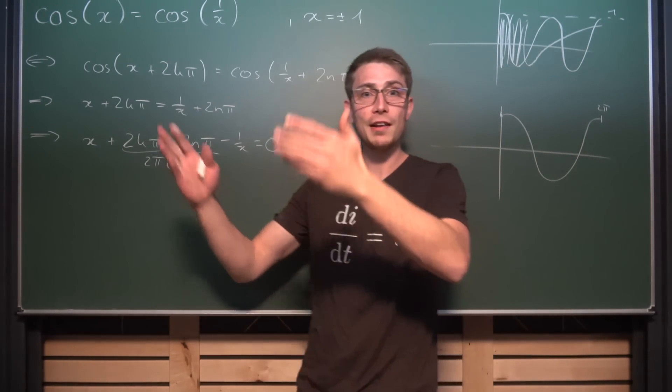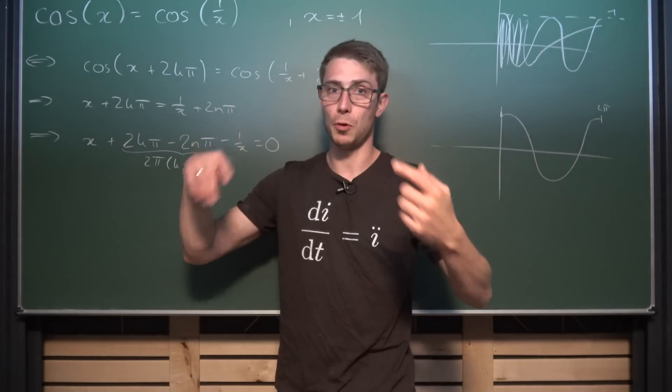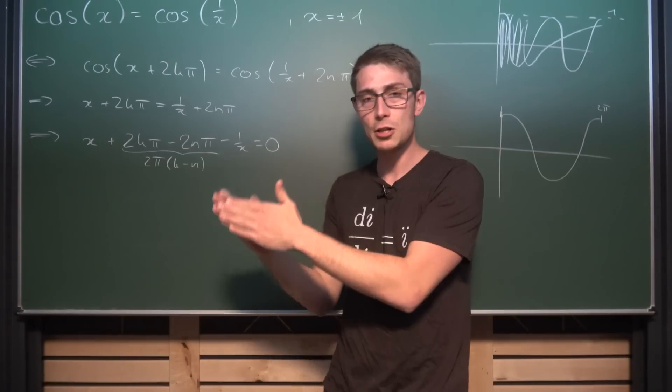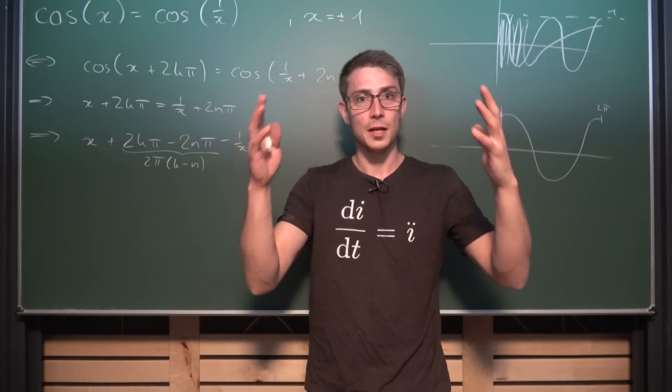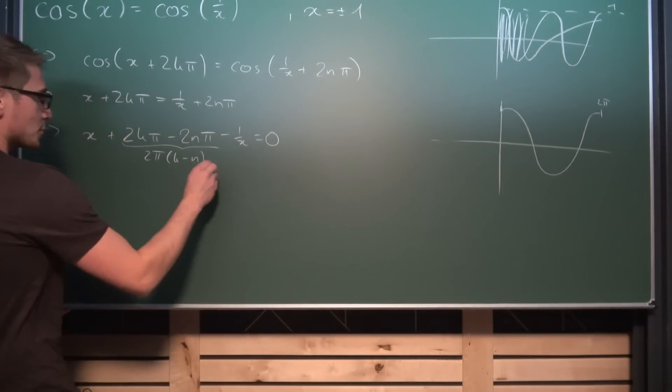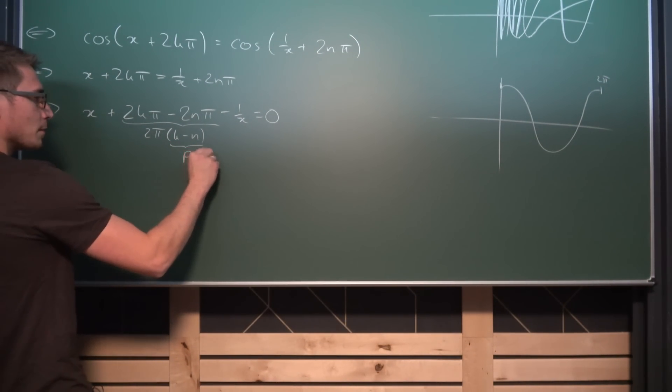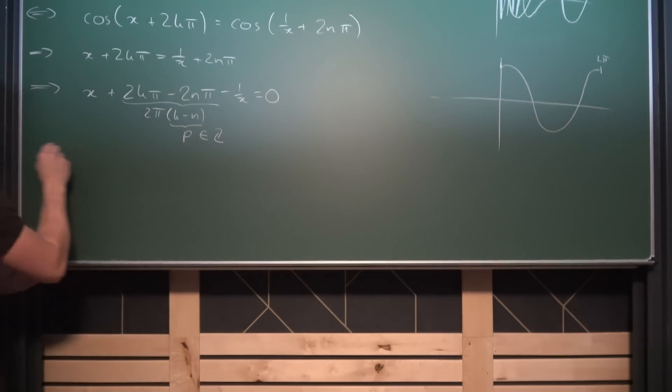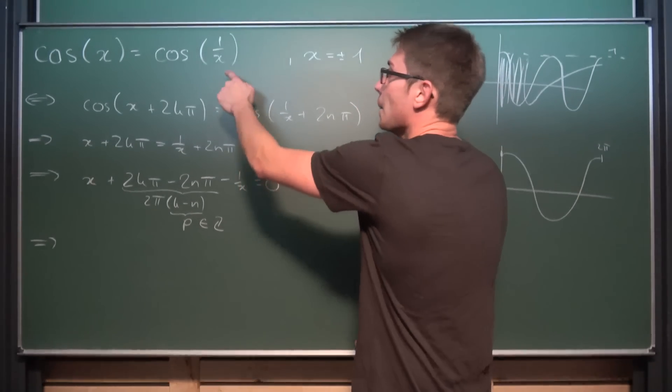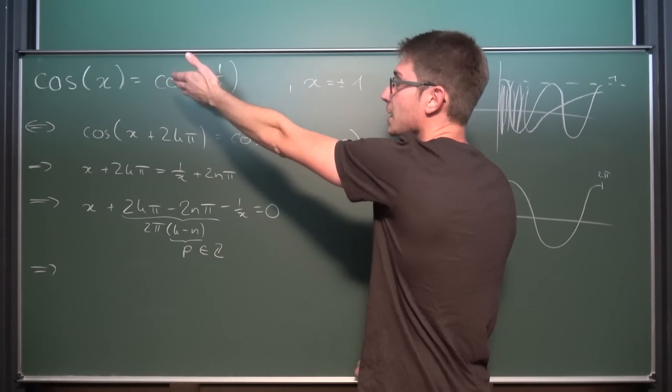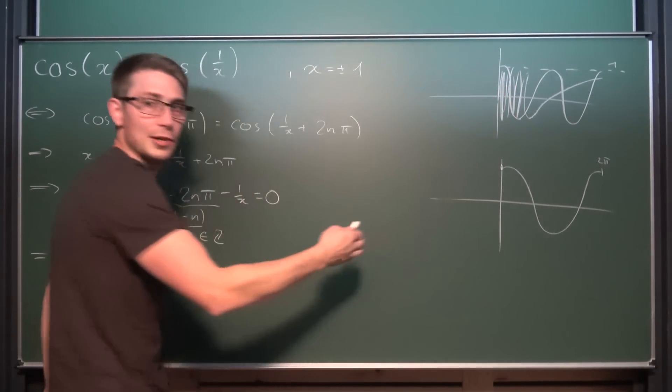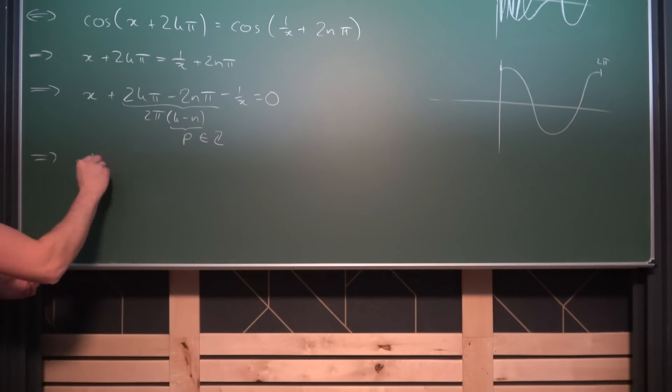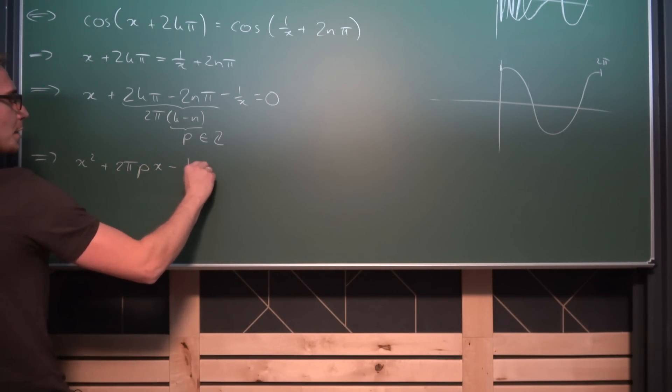Just a numerical example: 5 - 3 is 2. They are both element of the positive and negative integers, and if we subtract one from the other, we are going to get 2, which is once again element of the positive and negative integers. This is what it means for a set to be closed under a certain operation. So we are just going to re-evaluate this to p being element of the positive and negative integers. Multiplying both sides by x under the condition that x is not equal to 0, we are going to get x² + 2π·p·x - 1 = 0.